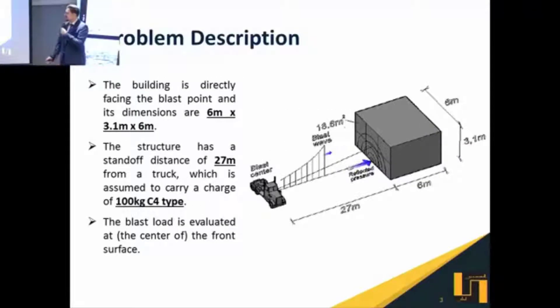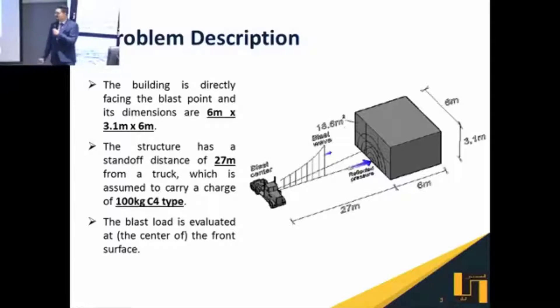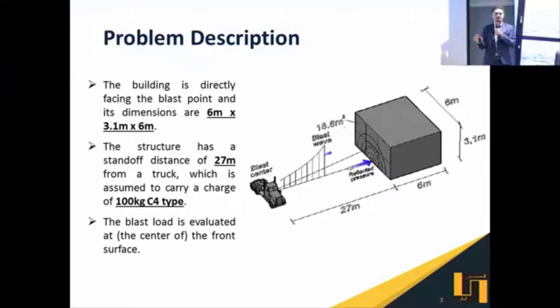Our problem consists of a small building with dimensions of 6 by 6 by 3.1 meters. The building will be subjected to a blast of 100 kilograms of C4 type explosives set at a distance of 27 meters.